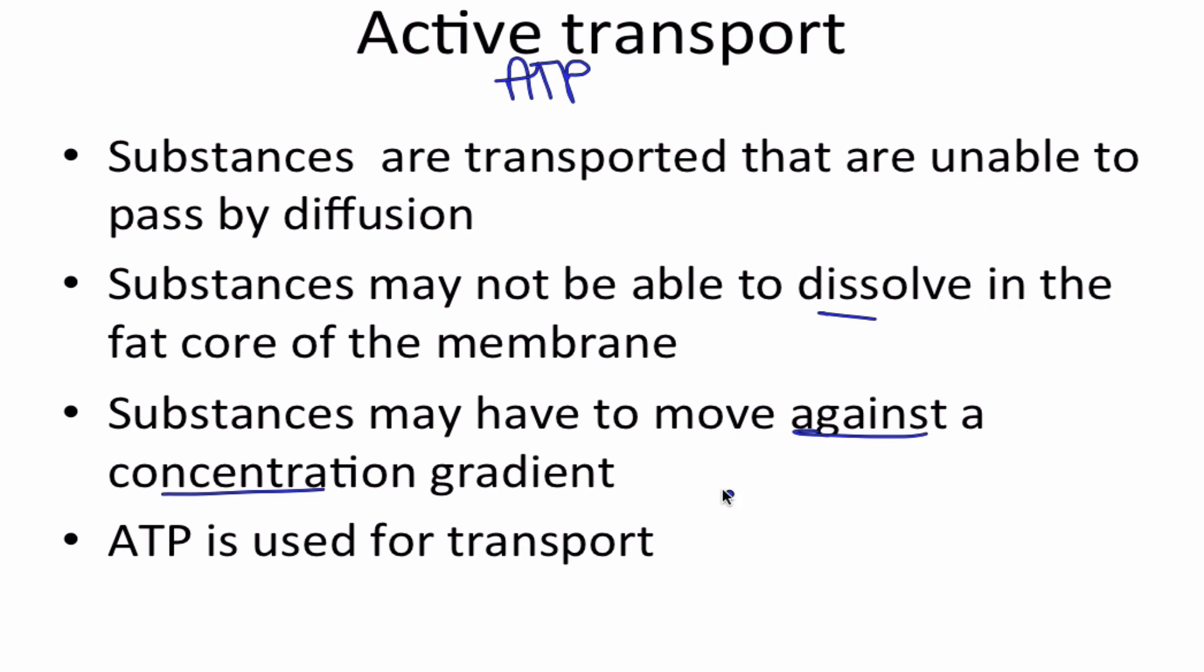Against a concentration gradient means that molecules in diffusion are going to move from areas of high concentration to low concentration. Active transport is going to move materials from a low concentration to a high concentration. So it's going to be the opposite. You're going to use ATP for that transport.